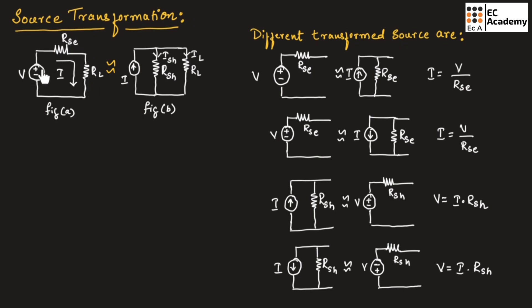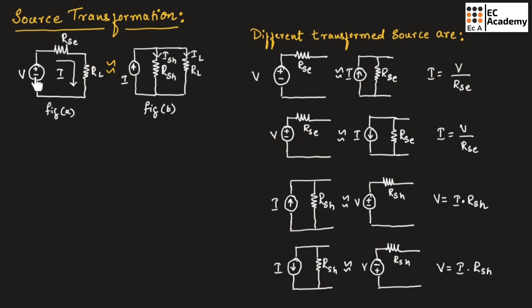This voltage source can be replaced by a current source as shown in this figure. Since we know I is equal to V by R, whenever we are transforming a voltage source into a current source, the internal resistance should be connected in parallel with the current source. In the same way, if we are transforming a current source into a voltage source, the resistor should be connected in series with the voltage source.